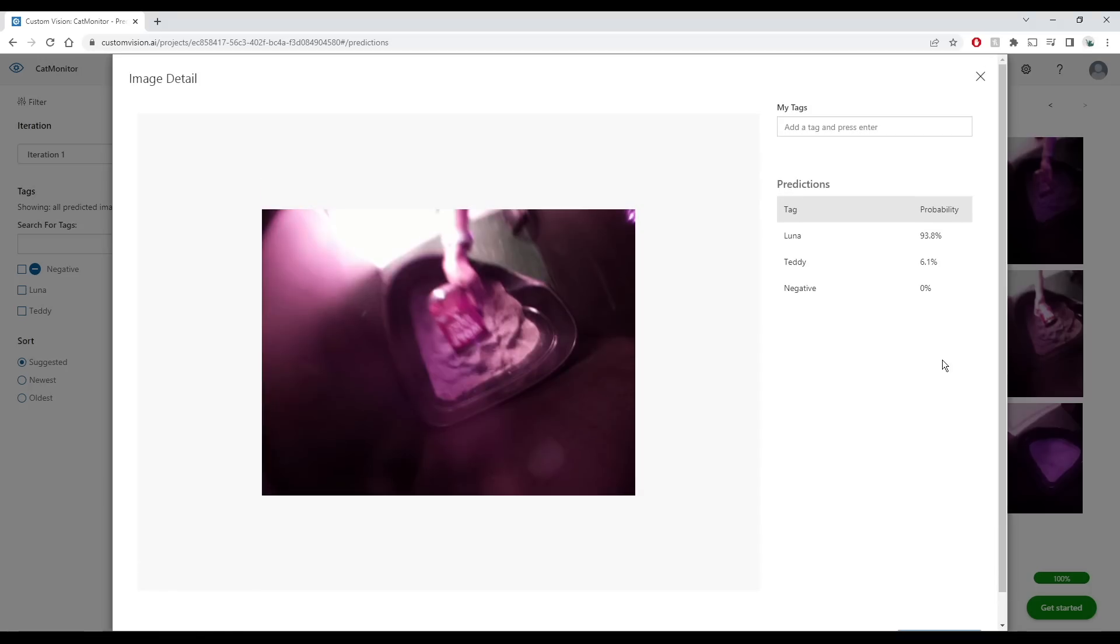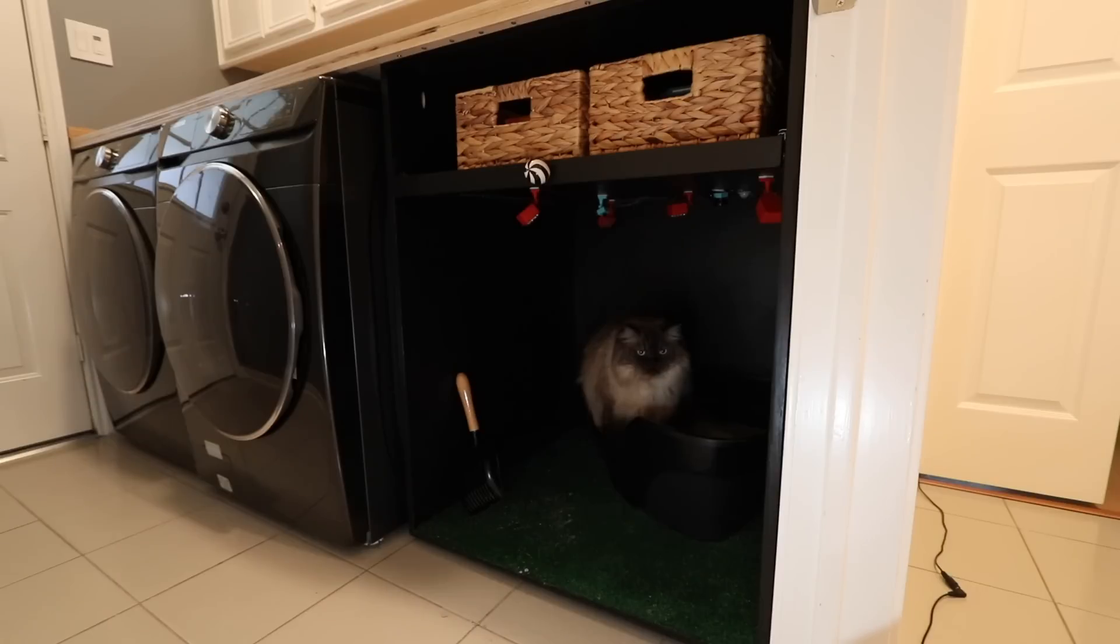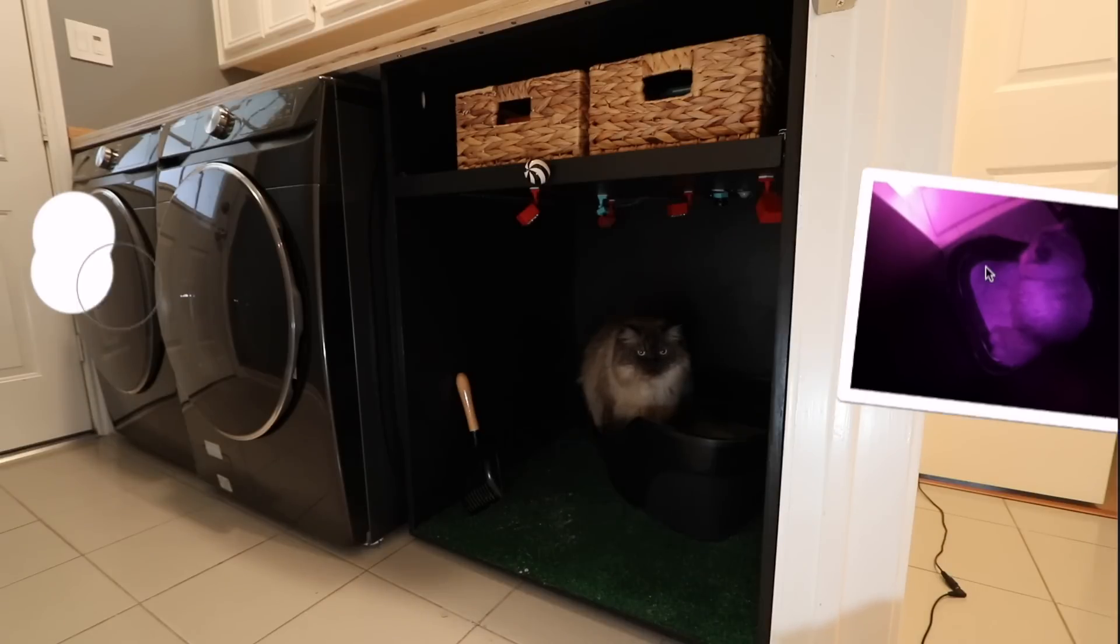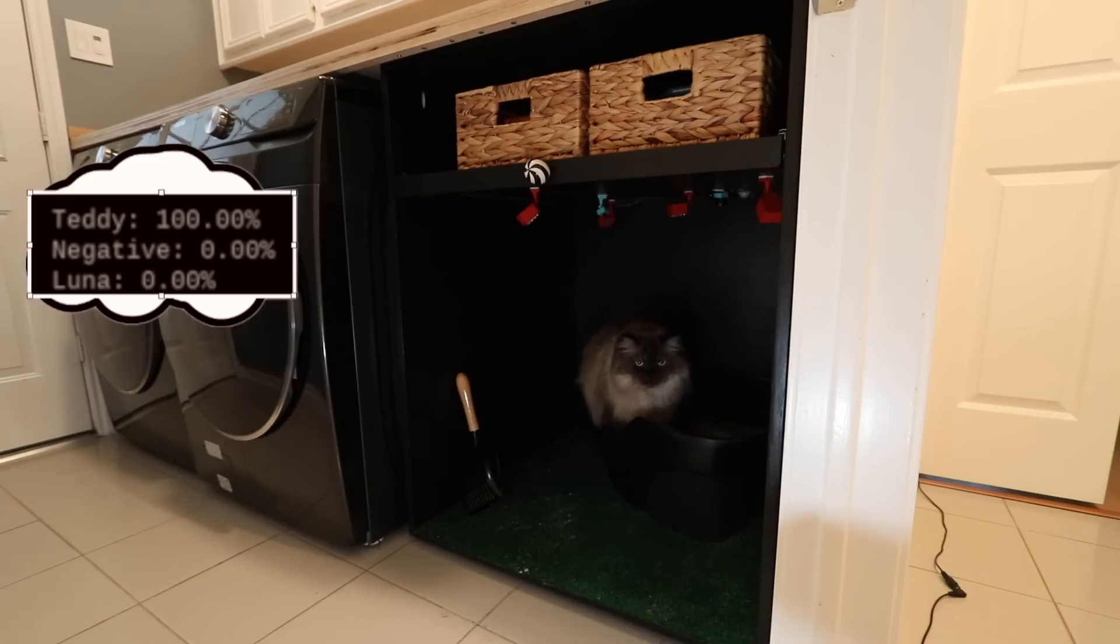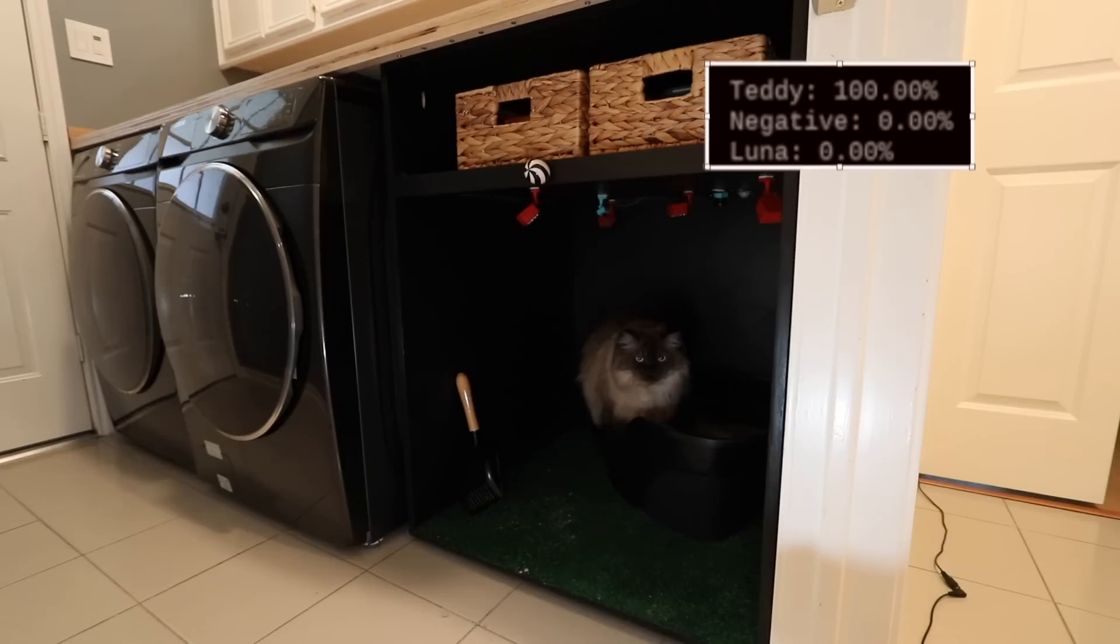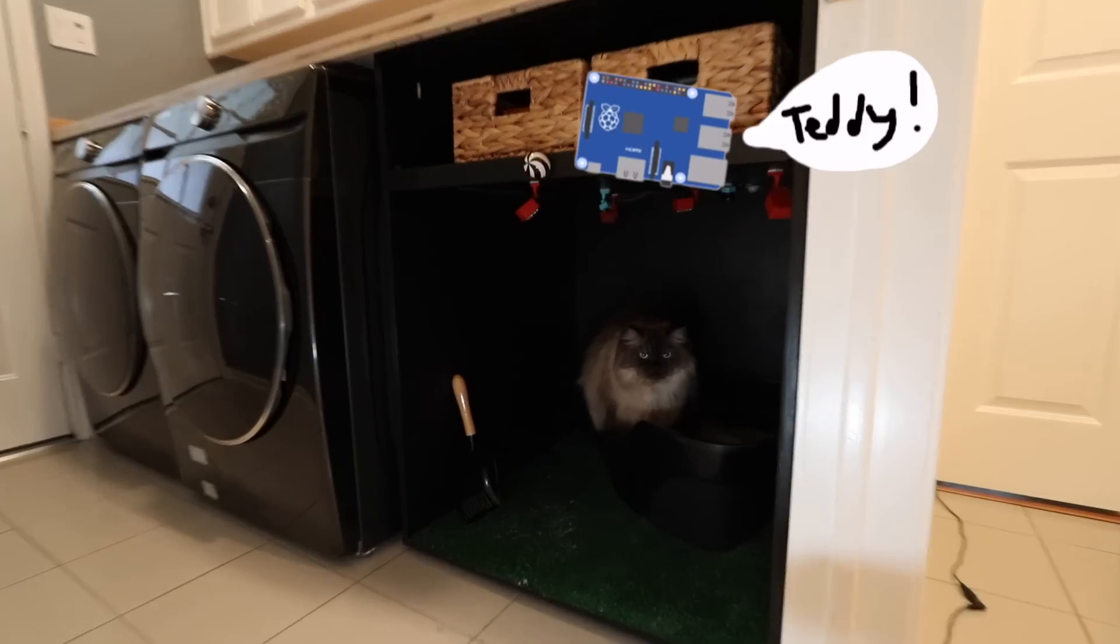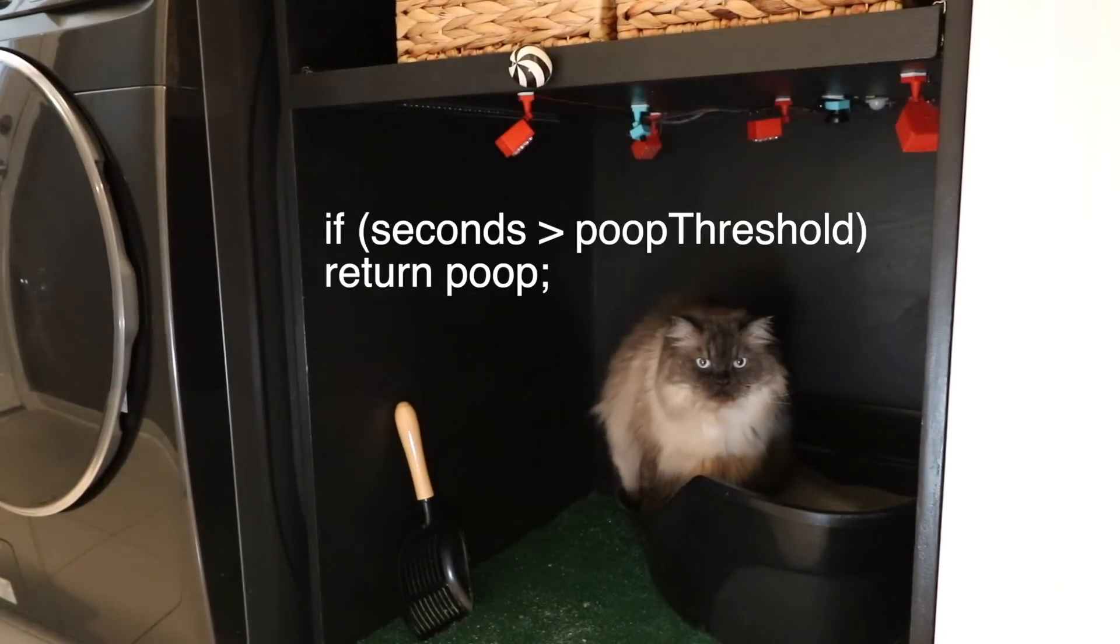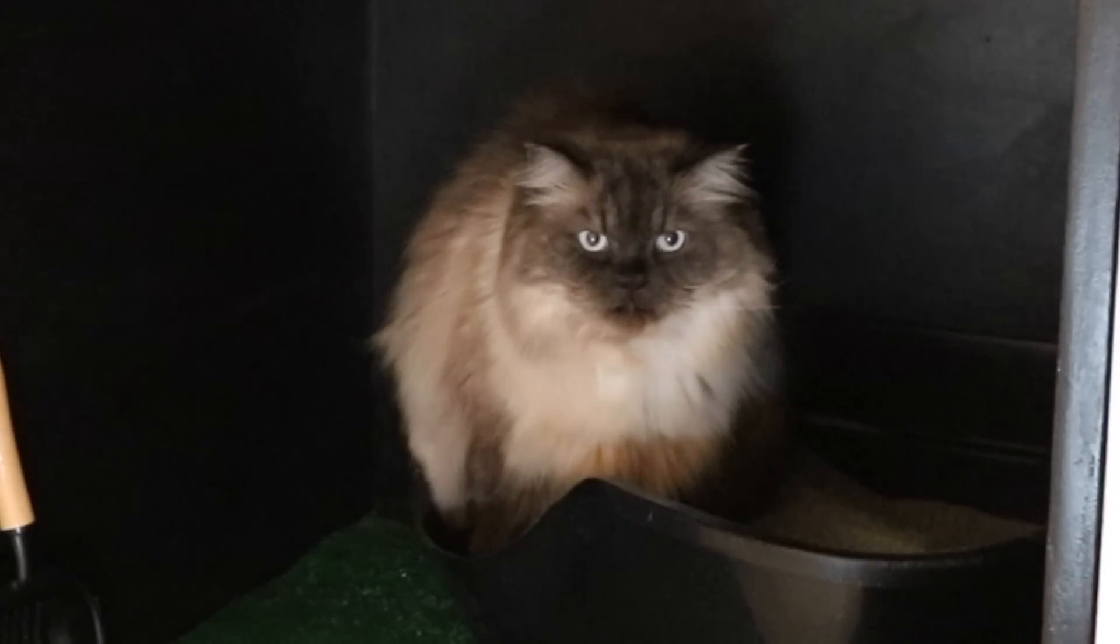And the way that it should work is that it takes a picture, it sends it to a server which processes the image, sends back the prediction to my computer, tells me which cat is pooping, and with my math I know if they're pooping or peeing. Teddy, you want to test the prediction thing?